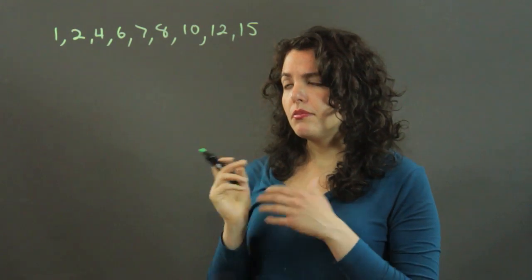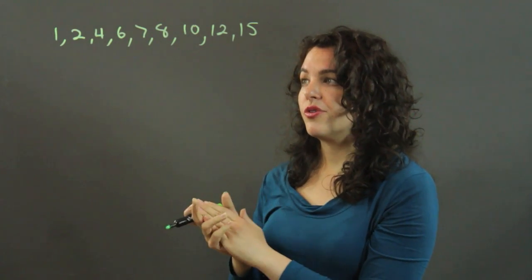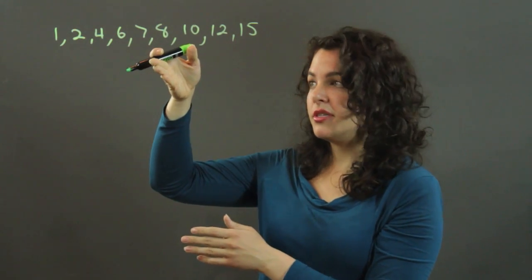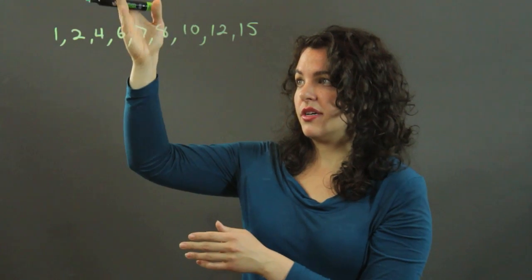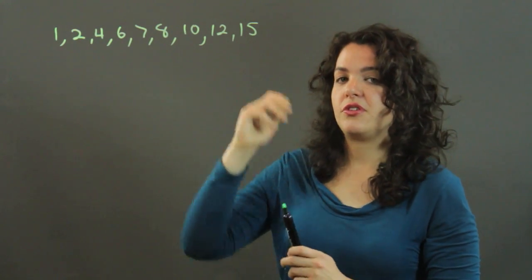Now, the quartiles divide your set of numbers into four parts. So there are going to be three quartiles, one that finds the middle point, and then a lower quartile divides the first half into two, upper quartile divides the second half into two.